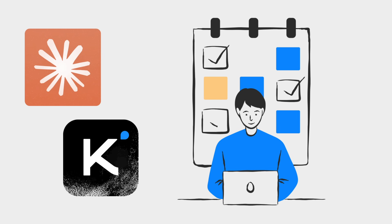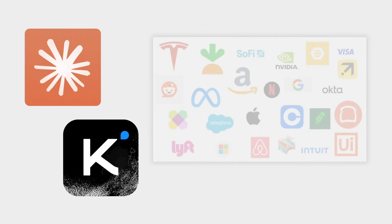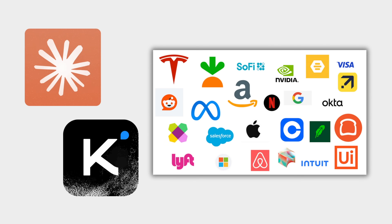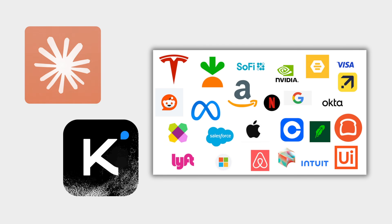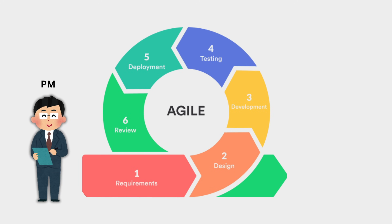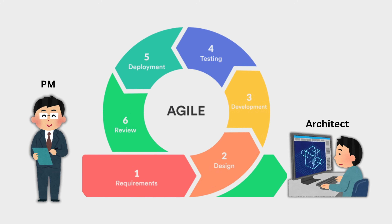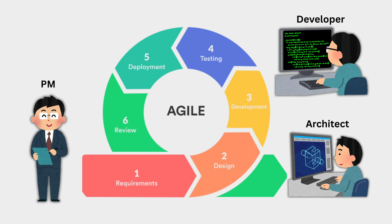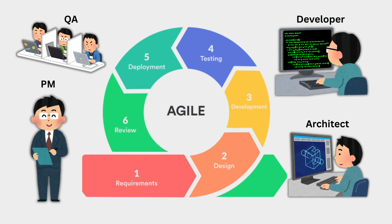We all know that AI can write code, but can it really build real, production-ready software? Can it follow a professional agile workflow with a product manager, an architect, a developer, and even a QA team?